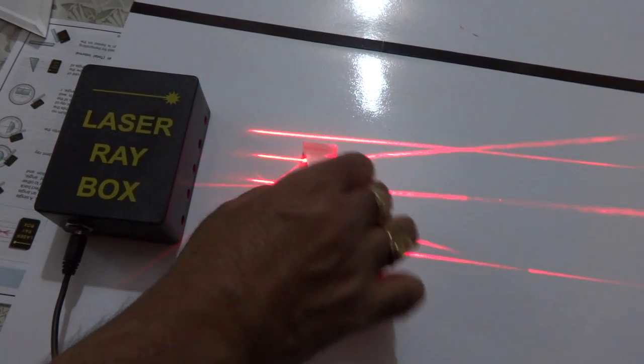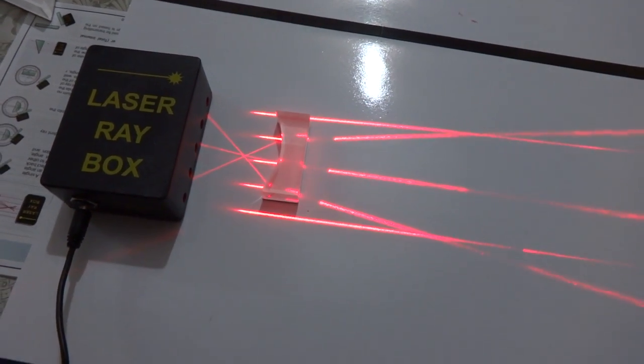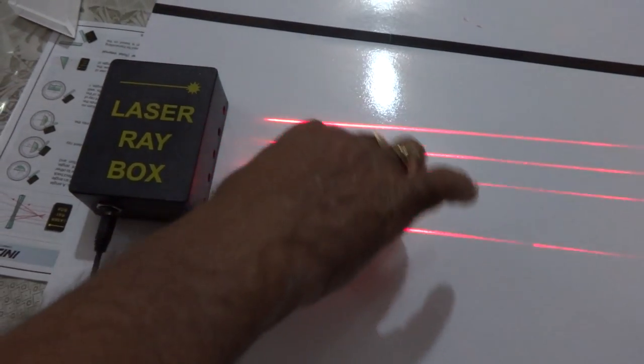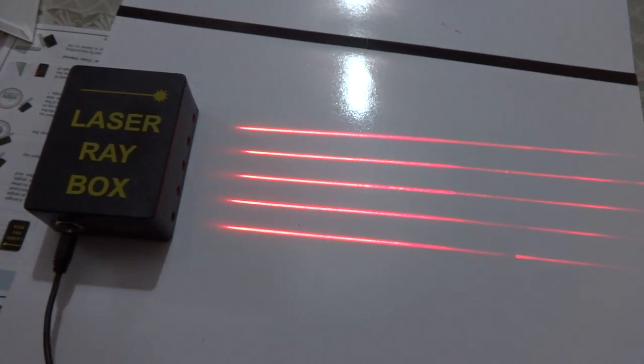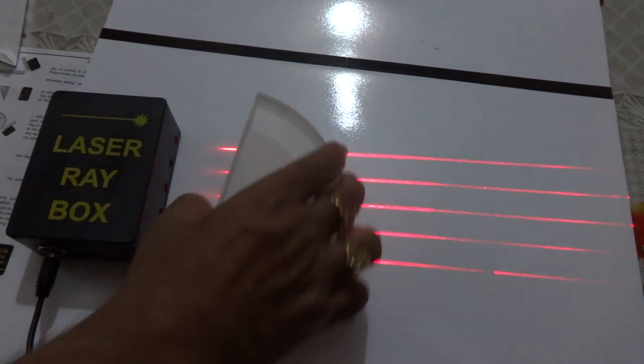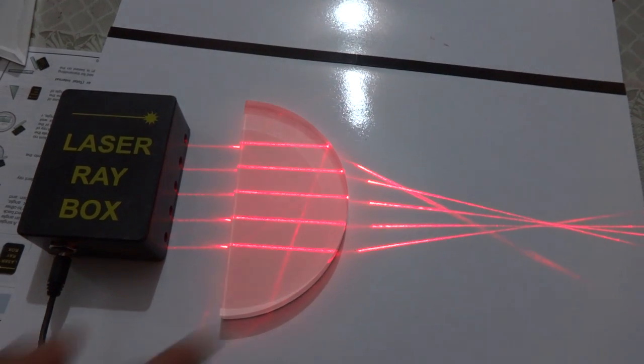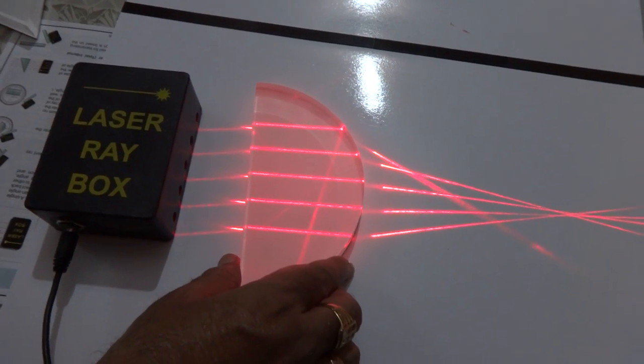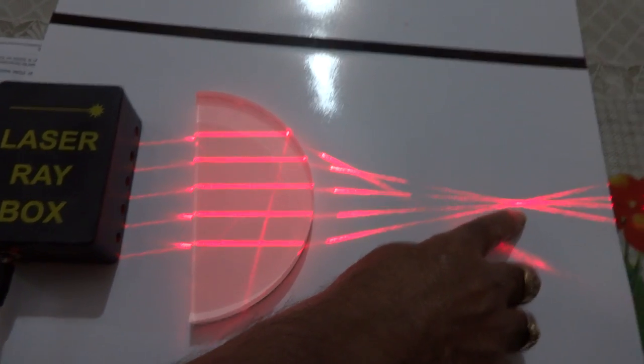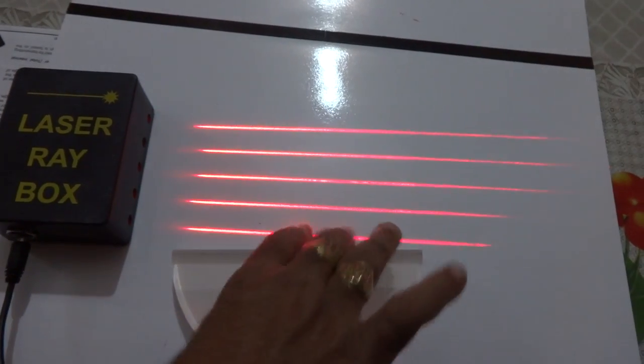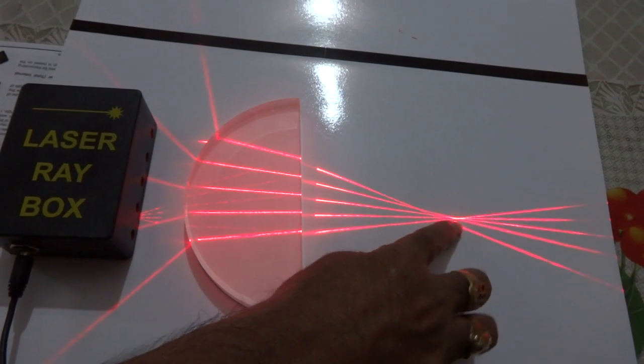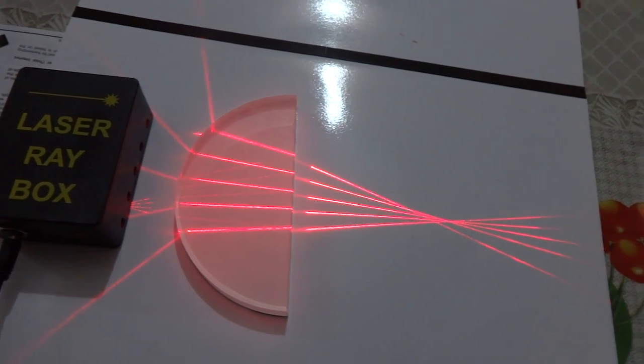Now, this is plano-concave. The rays get diverged. So, now, we can observe this is another plano-convex lens. So, here the rays are formed. So, here it is the focal point of it.